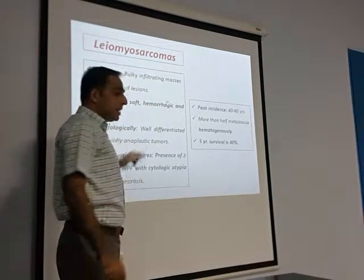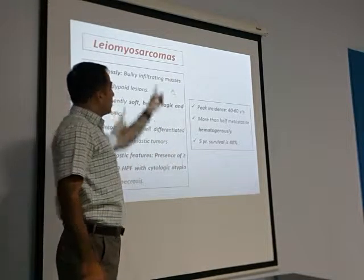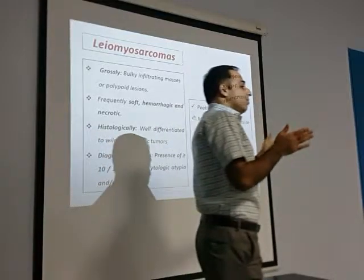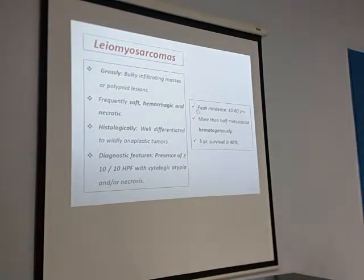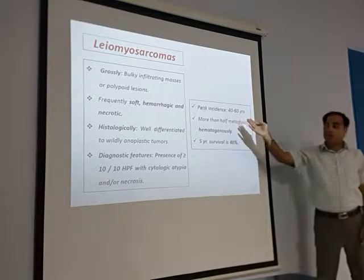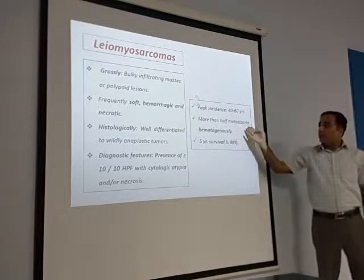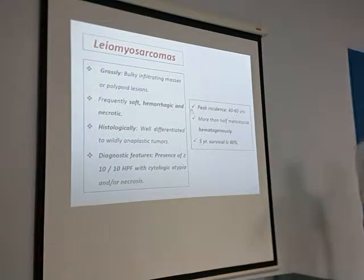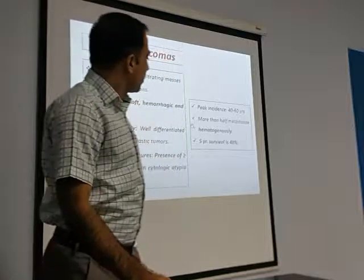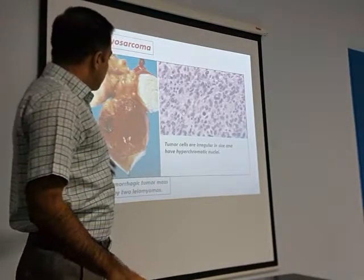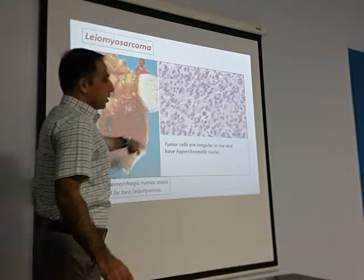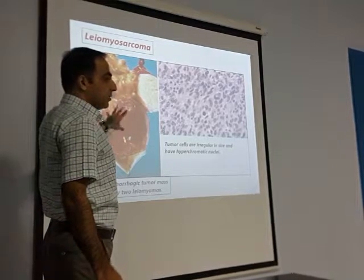So if it is less than 10 mitoses, you cannot diagnose it as leiomyosarcoma. You have to say it is a tumor with uncertain malignant potential — a borderline tumor. Peak incidence is in old age, around 40 to 60 years mostly. More than half will metastasize through the blood — hematogenous metastasis — and the five-year survival is 40%.